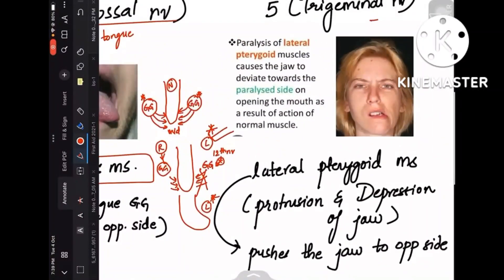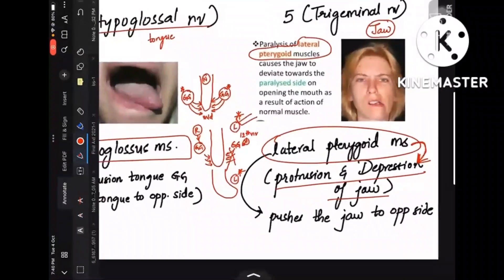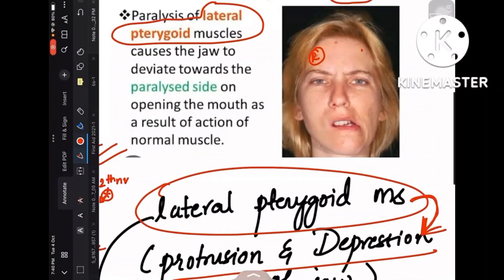Coming to the trigeminal nerve, it relates to the position of the jaw and muscles of mastication. The muscle under discussion is the lateral pterygoid. Its function is protrusion and depression of the jaw — it is the only depressor muscle among the masticatory muscles, which include masseter, lateral pterygoid, medial pterygoid, and temporalis. Its function is similar to genioglossus — it pushes the jaw to the opposite side normally. When there is a left-sided lesion, the left lateral pterygoid cannot function, the right keeps pushing, and the jaw deviates to the left — the same side as the lesion.